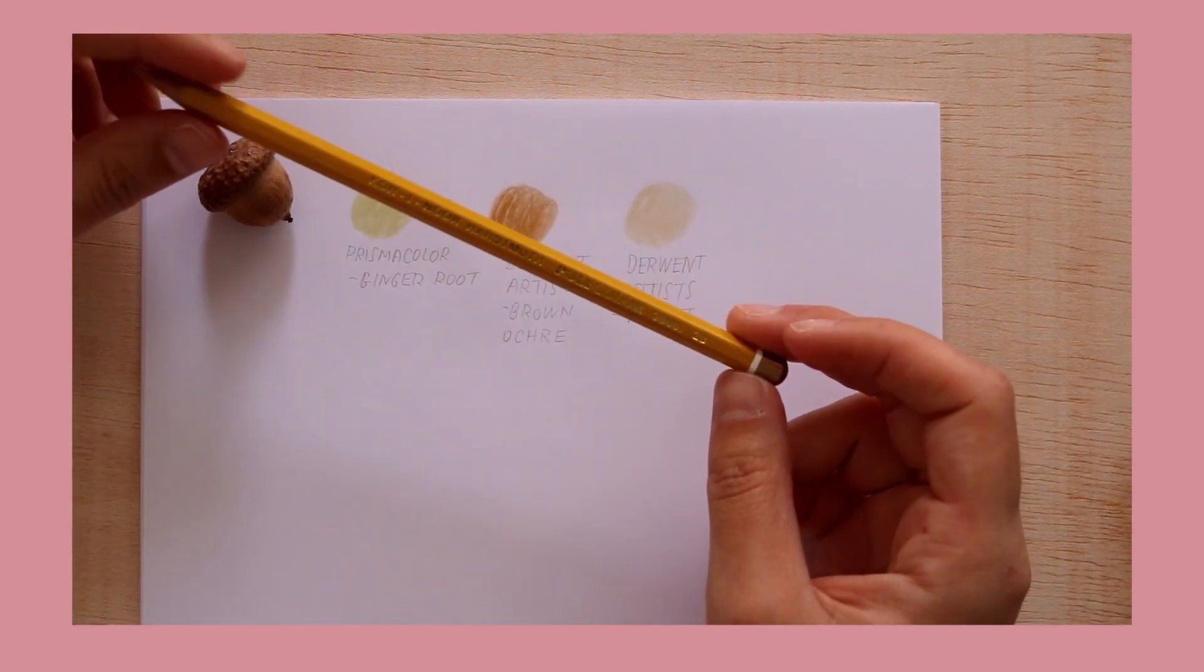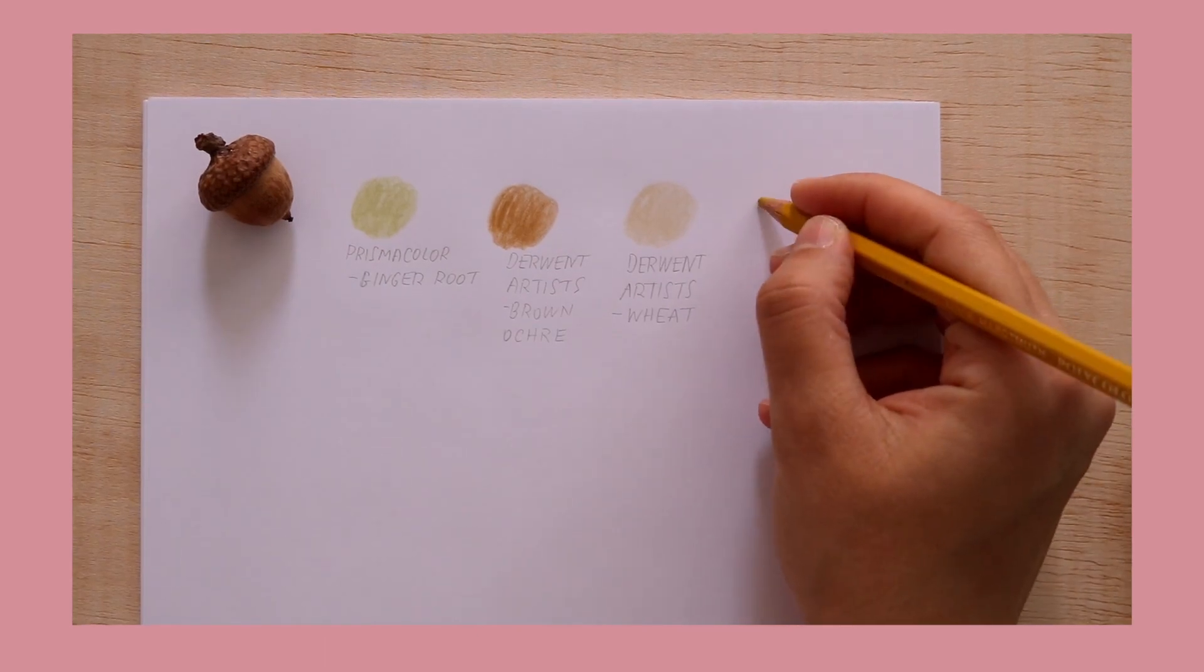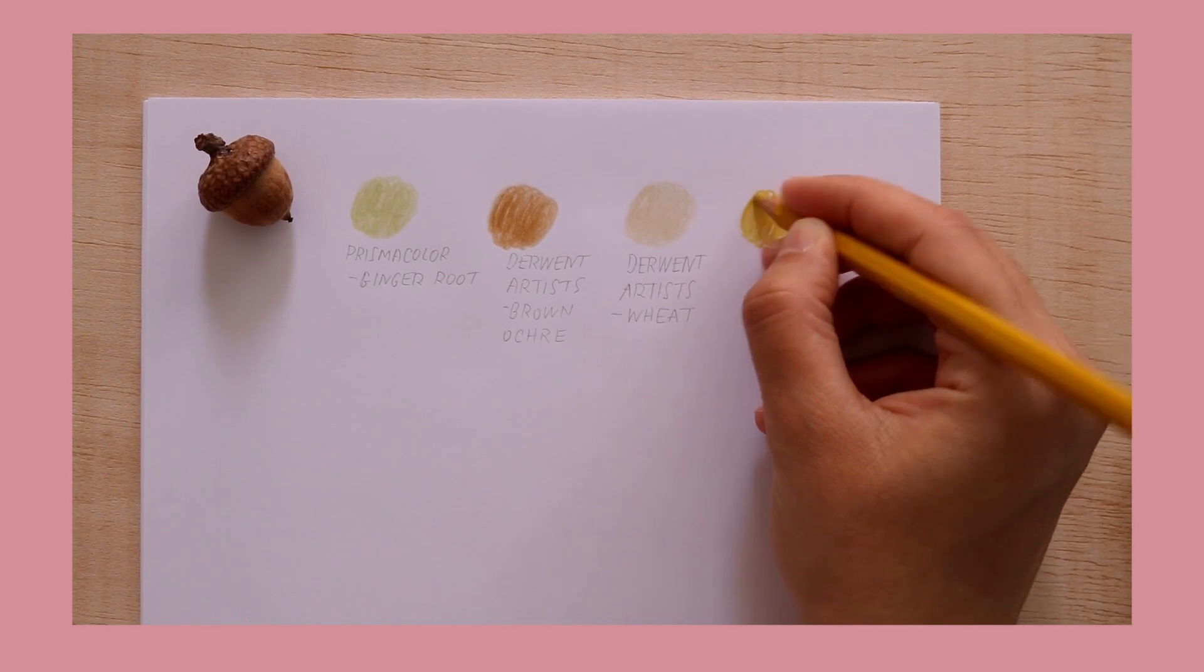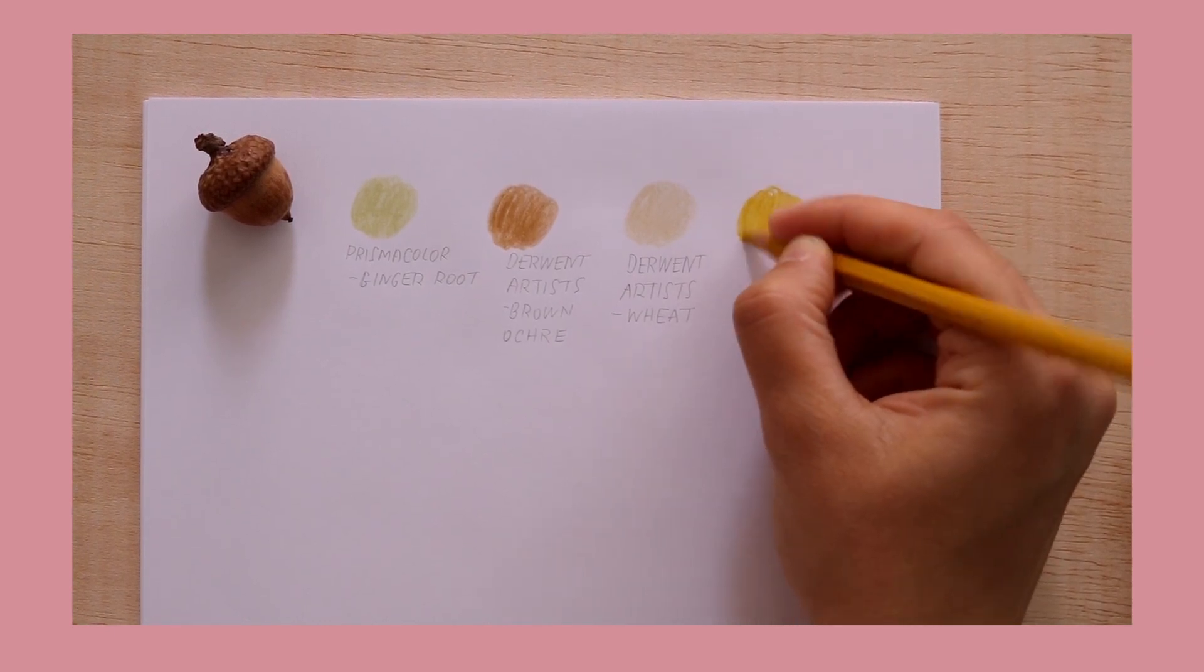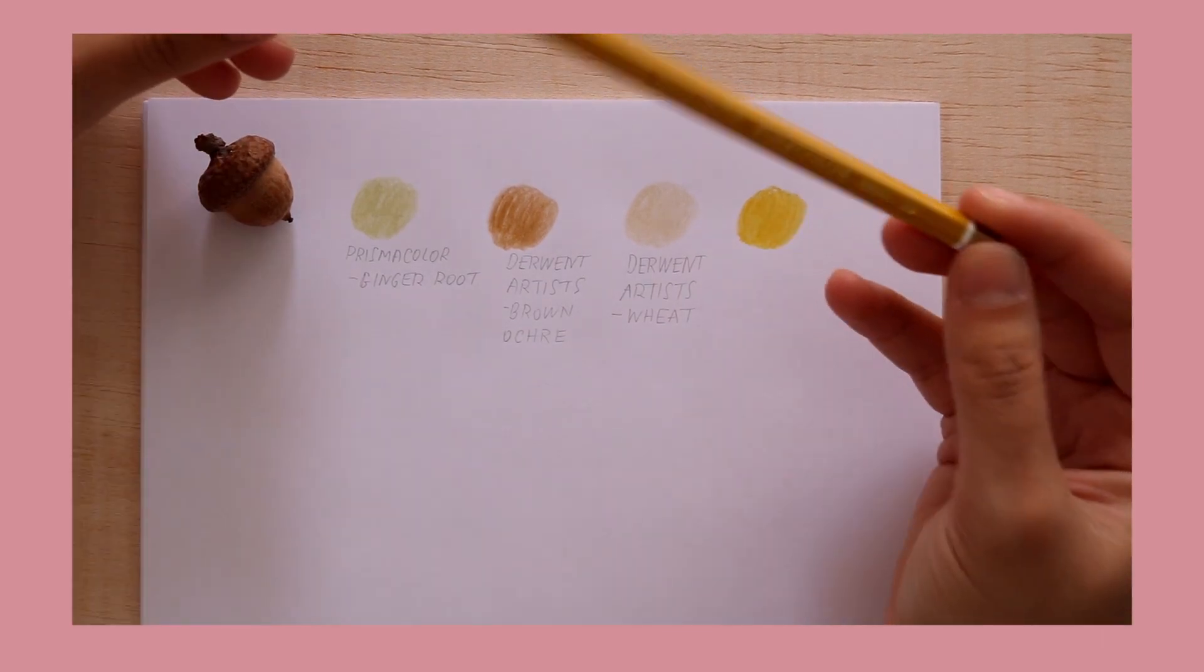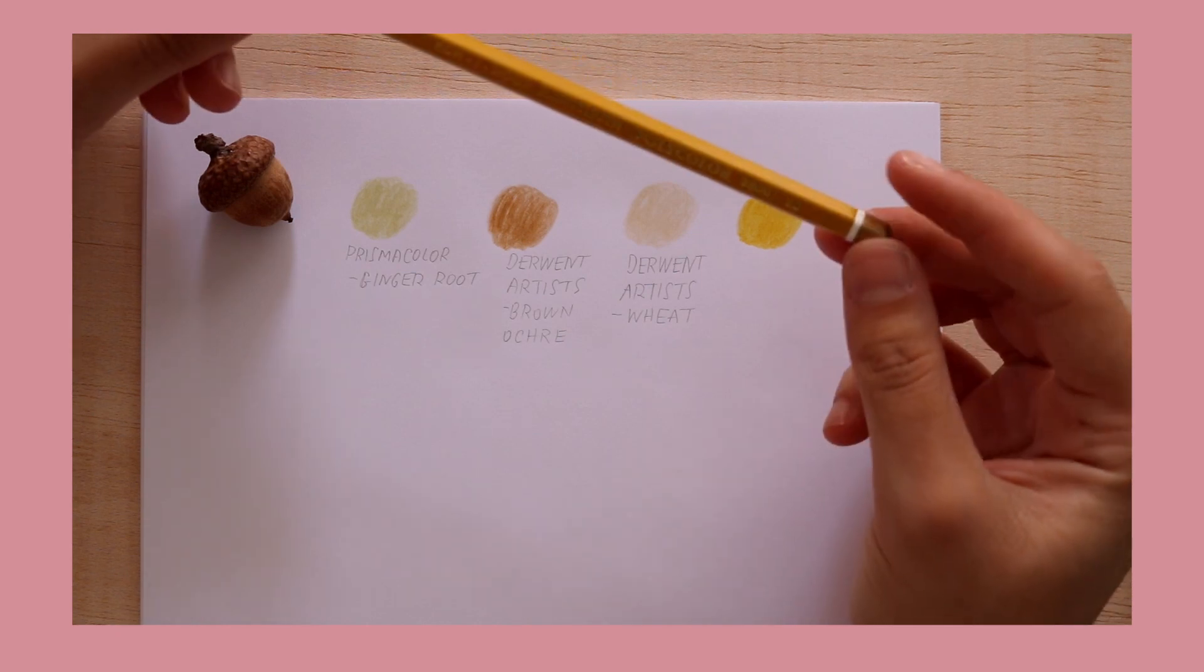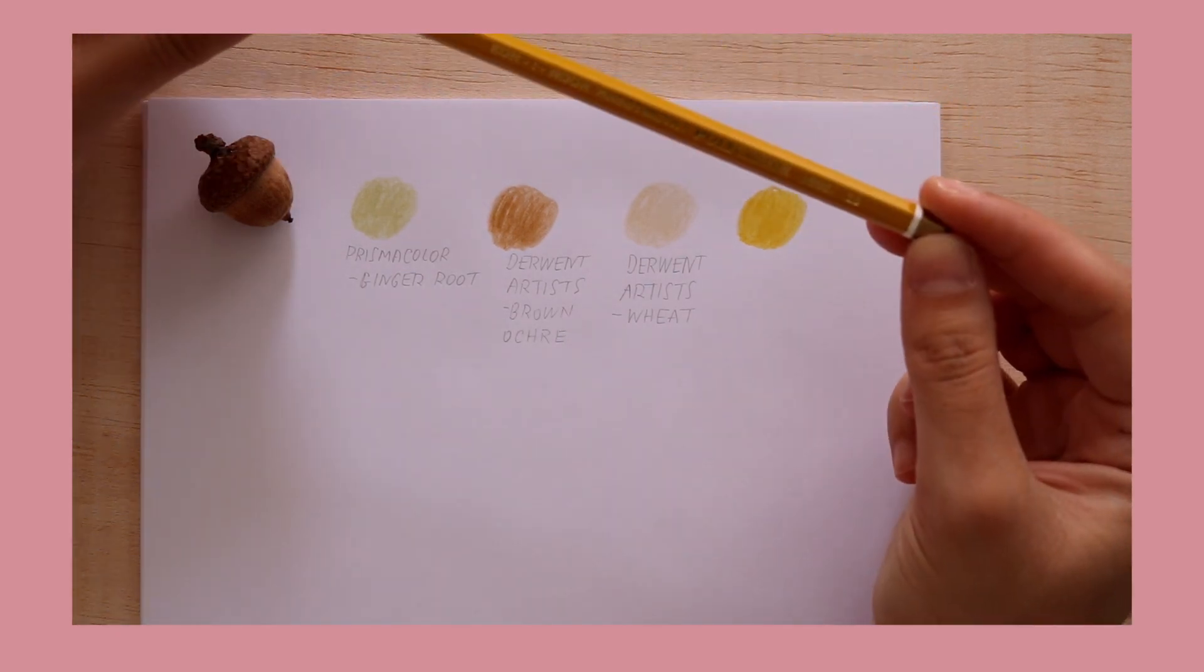Then, Gold Ochre by Koh-i-Noor. This is such a beautiful, warm and vibrant yellow, but this is such a warm and natural color that you can see everywhere in nature. It's so soothing and really beautiful.